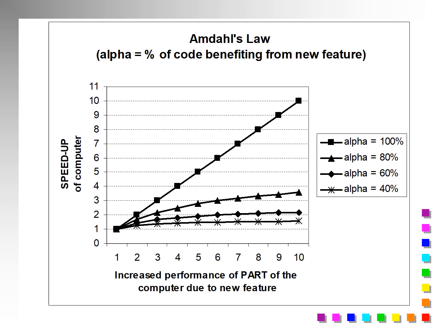And then when we look at a graph of this, we see Amdahl's Law where you have the percentage of code benefiting from a new feature. You see the speed up of the computer on the y-axis and the increase in performance of part of the computer due to the new feature on the x-axis. And then you have different curves. The first curve is where you have 100% speed up.